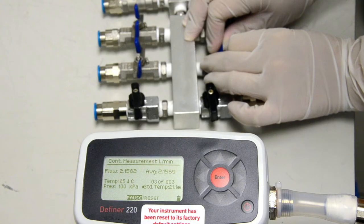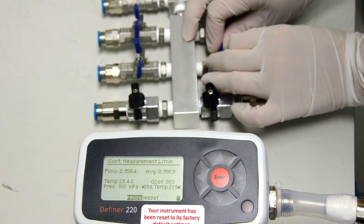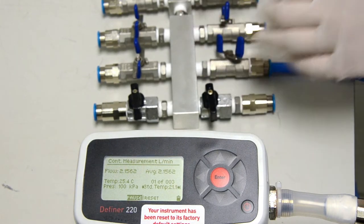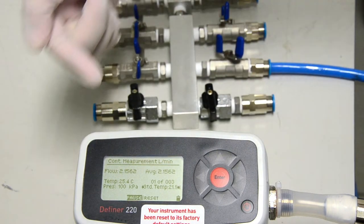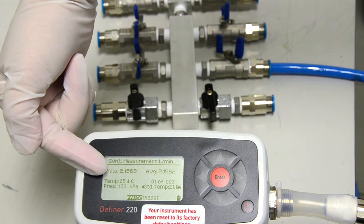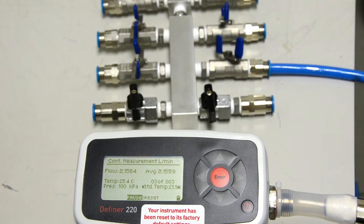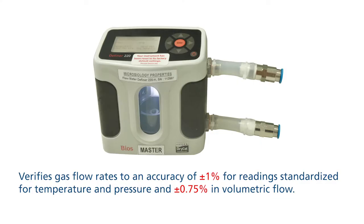Before attaching the cassettes, flow rate is identified. The Definer 220 from Mesa Labs is used — a flow meter definer which verifies gas flow rates to an accuracy of ±1% for readings standardized for temperature and pressure, and ±0.75% in volumetric flow.